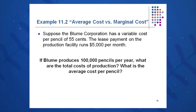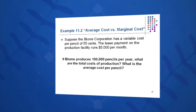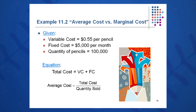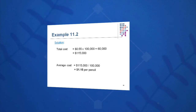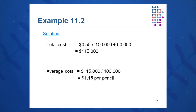Here's another example. This company has a variable cost per pencil of 55 cents. The rent on the production facility is $5,000 per month. 100,000 pencils per year are produced. What are the total costs of production and what is the average cost per pencil? Total cost is variable plus fixed: 55 cents times 100,000 pencils plus $60,000 of fixed cost — taking the form y equals mx plus b — gives total cost of $115,000. Average cost is $115,000 divided by 100,000 pencils, or $1.15 per pencil.